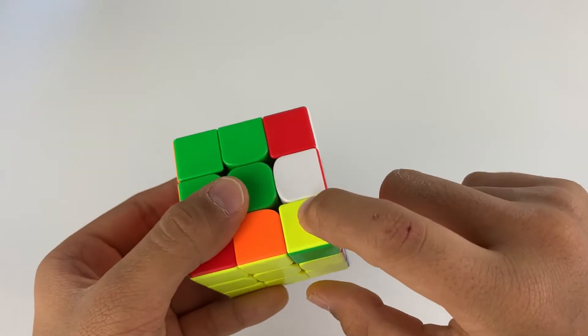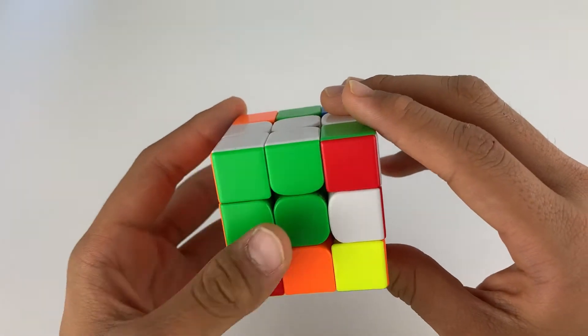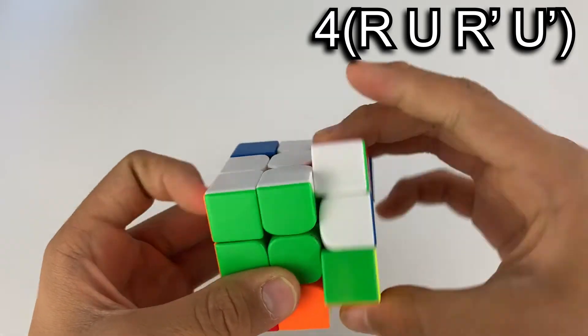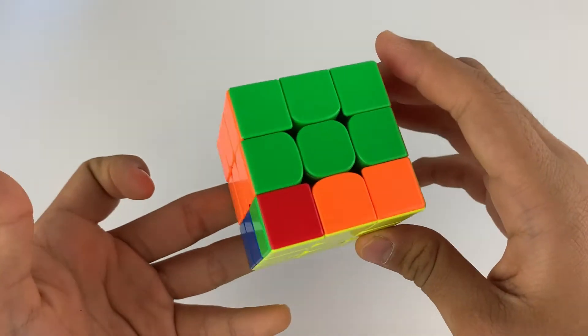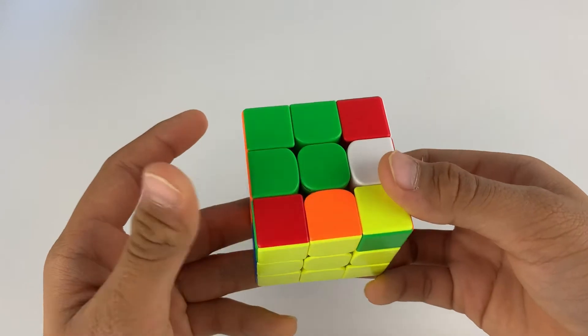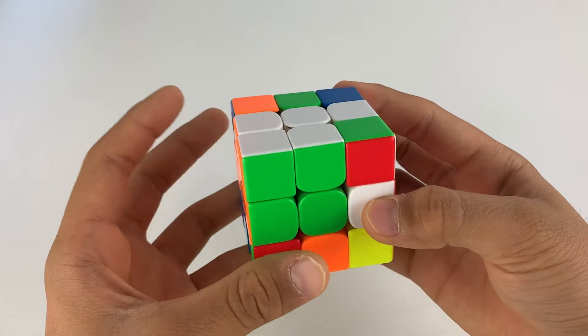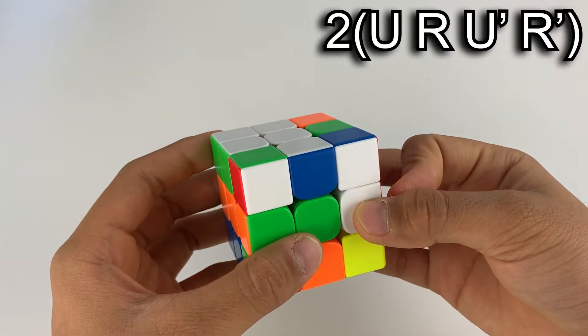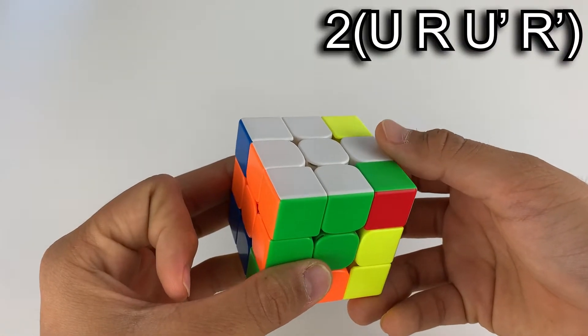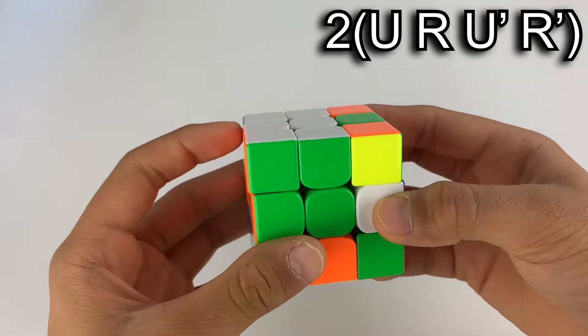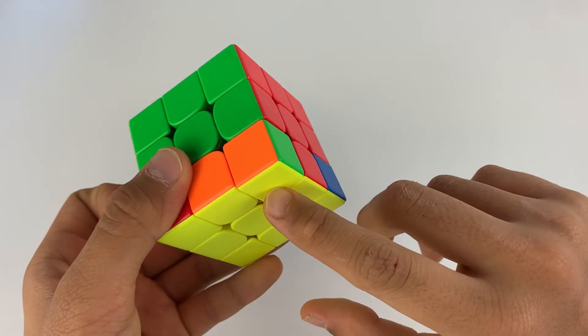But if you run into this situation, you'll have to do it four times and that is really time consuming. So something you can do that makes it much faster is do the inverse of the move I just showed you. So do this only twice and it'll solve.